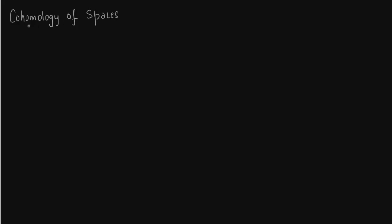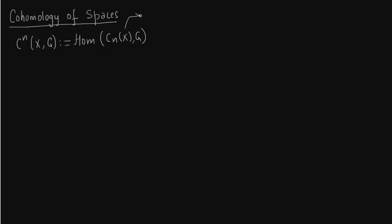In this lecture we talk about cohomology of spaces, in particular singular co-chains with coefficients in G. These singular co-chains with coefficients in G are nothing but the dual of the singular chain group. The singular chain group is built up of singular n-simplices, and these singular n-simplices form the basis of the singular chain group.